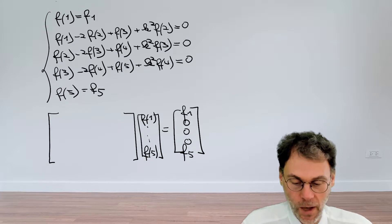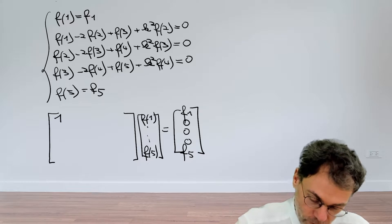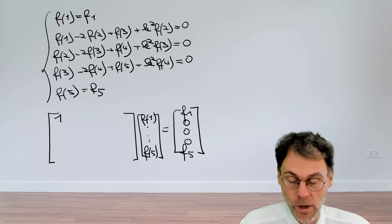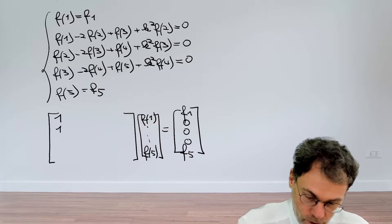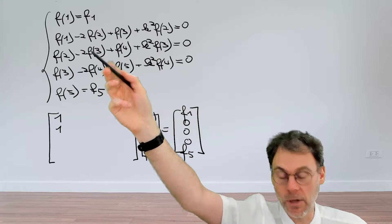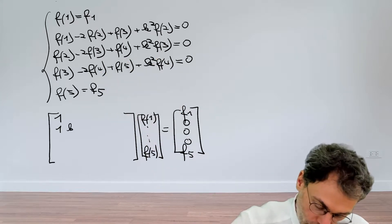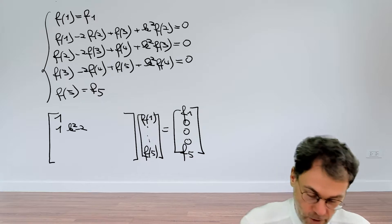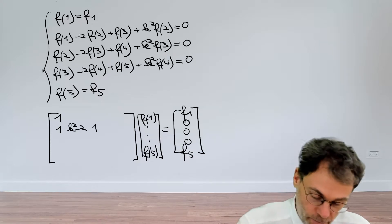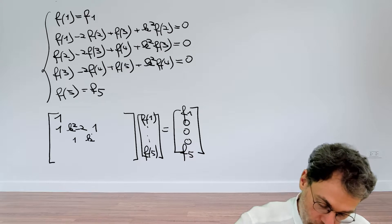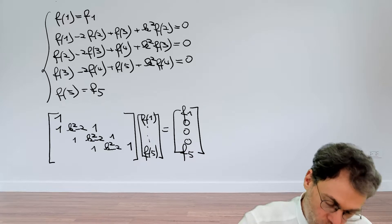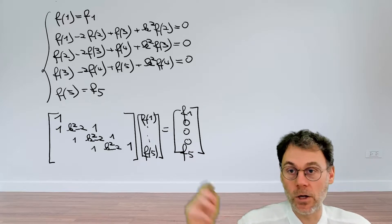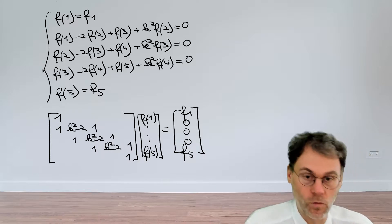And if you now look at the equations that we have, the first equation is just one times f1 and then all the other ones are zero. For the second equation, if we look at the coefficients, we have 1 for f1. For f2, we have k squared minus 2. And then we have, again, 1 here. And then the pattern repeats. 1, k squared minus 2, 1. 1, k squared minus 2, 1. And then for the final equation, we only have a term in f5. So that's another 1 over there. And all the other guys are zero.